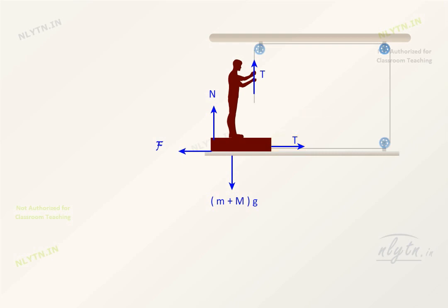So, writing equations, we have (m + M)g - T - N should be equal to 0. And T should be equal to F.